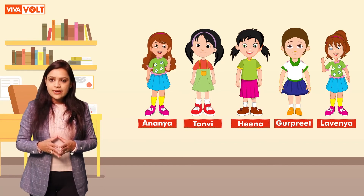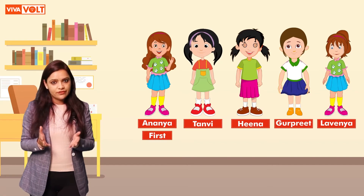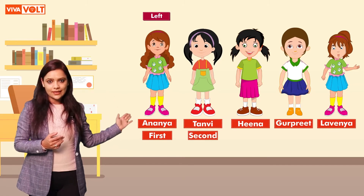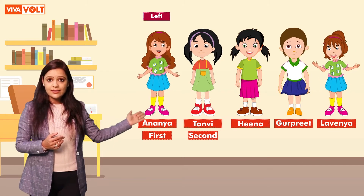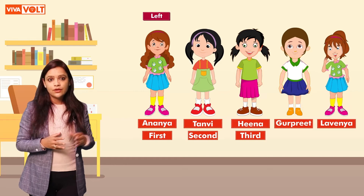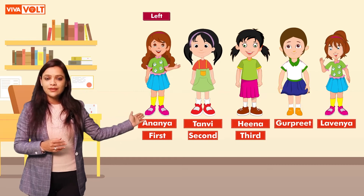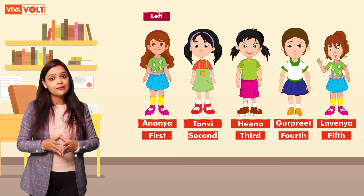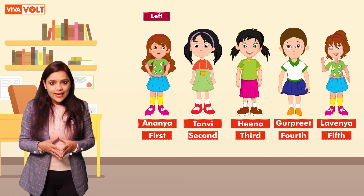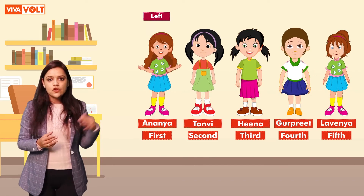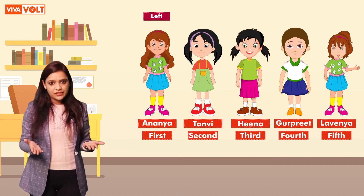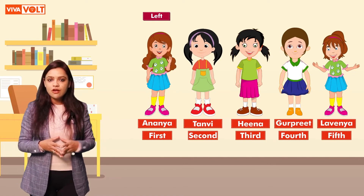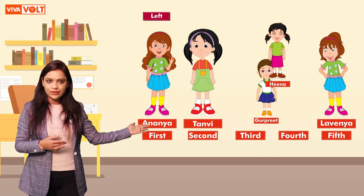Right now, Ananya is at the first position from the left, Tanvi is at the second position, Henar is at the third position, Gurpreet is at the fourth position, and Lavanya is at the fifth position. Let's see how the ranks of these girls will change if we interchange the positions of Henar and Gurpreet.